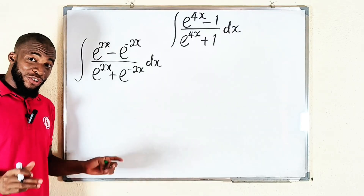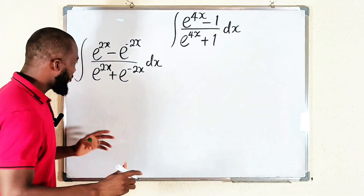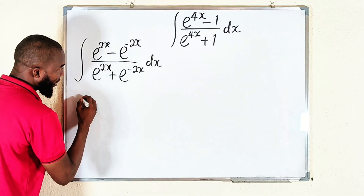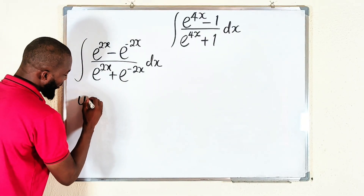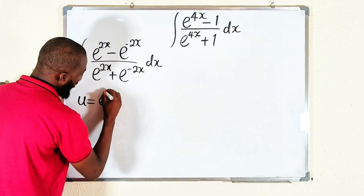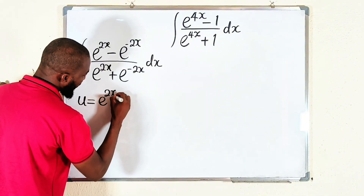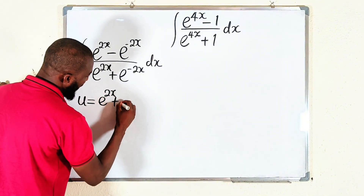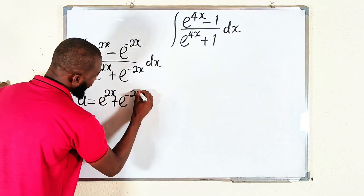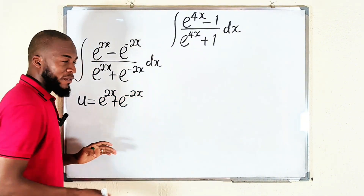Now we are going to do a substitution here. I would like to let u be equal to e^(2x) plus e^(-2x).